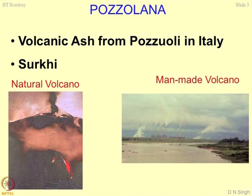Let us talk about pozzolana, the first and most important material in civil engineering. It is nothing but a volcanic ash from Pozzoli in Italy — that is how the name came. This is a naturally occurring volcanic ash and the property is: if you add water, it hardens. Hydration of the material. The counterpart in our country is Surkhi — the ash of any material. You add a little bit of lime, upgrade the properties, and it can be used for construction.